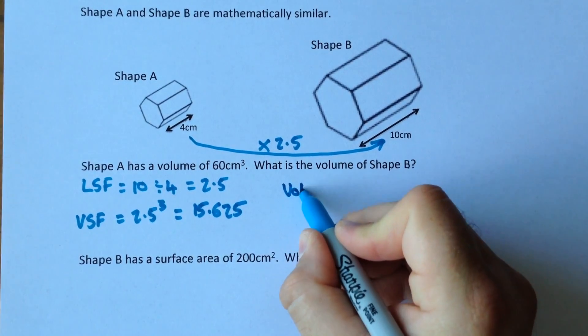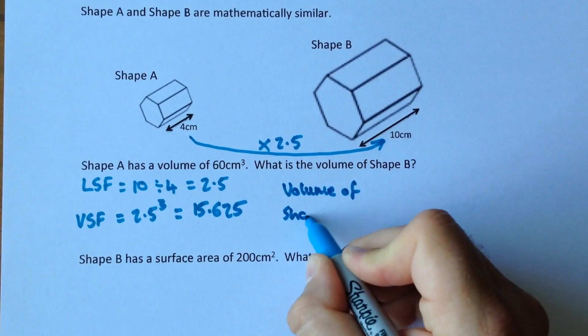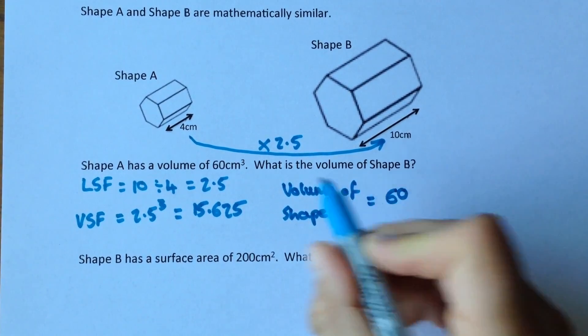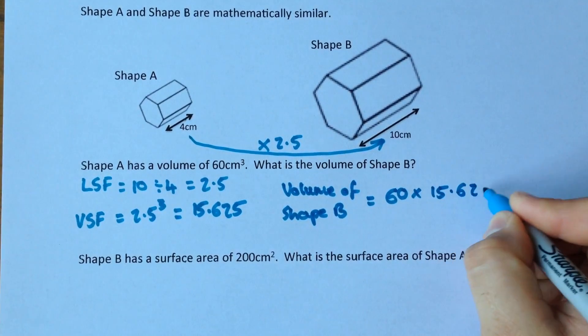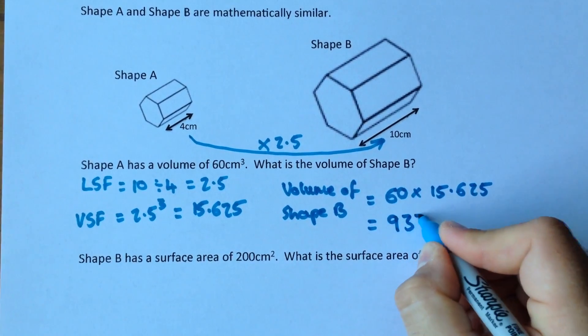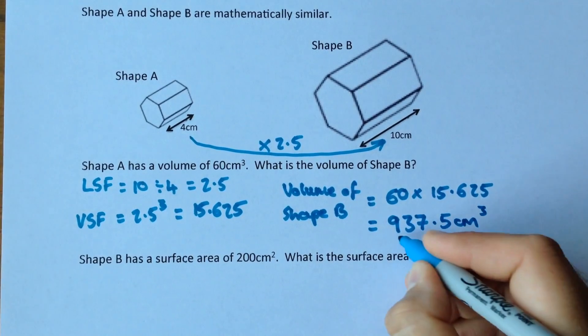So the volume of Shape B equals 60, which is the volume of Shape A, multiplied by 15.625, which gives us a new volume of 937.5cm³.